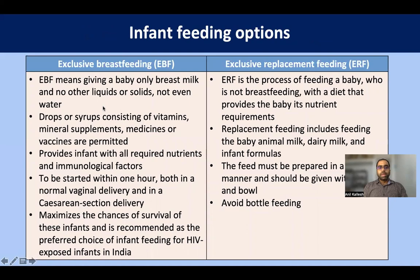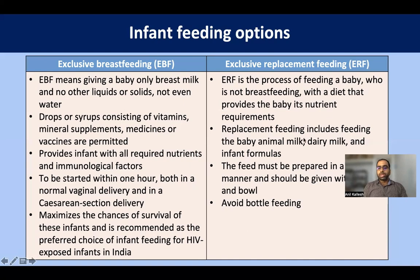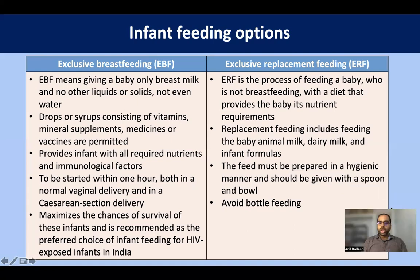Infant feeding options include exclusive breastfeeding or exclusive replacement feeding. Exclusive breastfeeding means giving only breast milk — no other liquids or solids, not even water, though vitamin drops or syrups are permitted. It provides all required nutrients and immunological factors, should be started within one hour of delivery, decreases risk of infections, and is recommended as the preferred choice in developing countries like India, where respiratory and diarrheal diseases are highly prevalent. Exclusive replacement feeding uses formula, animal milk, or dairy milk, prepared hygienically and given by spoon and cup.